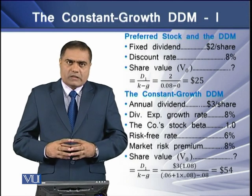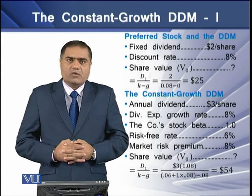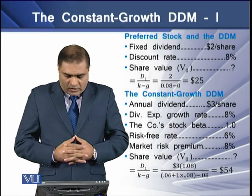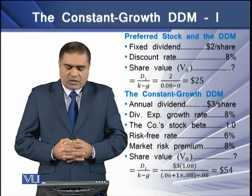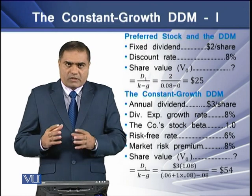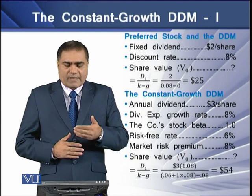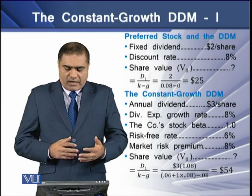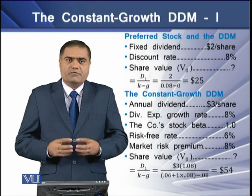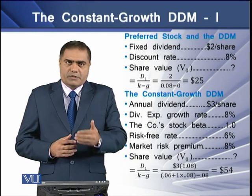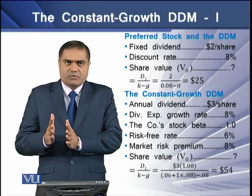Let's see how this specific dividend discount model works with a preferred stock valuation example. We have a fixed dividend of $2 per share and a discount rate of 8%. To determine the V0, we simply divide the dividend per share of $2 over the capitalization rate of 8%. Since G is 0, the answer comes to $25 per share. This dividend stream is treated as a perpetuity cash flow.